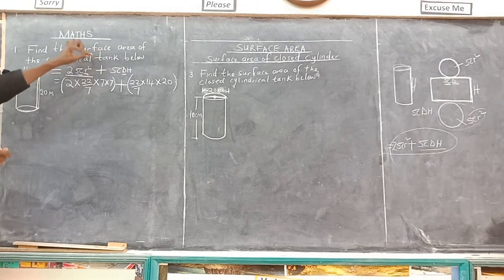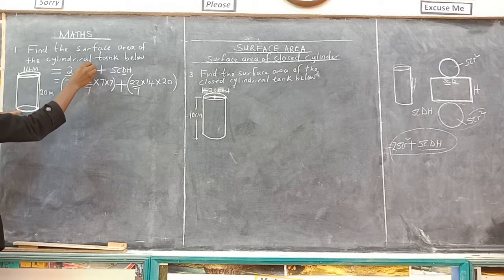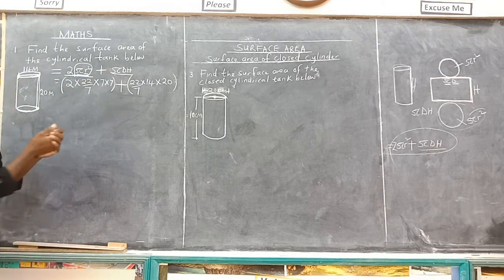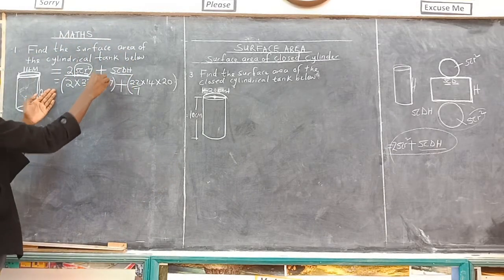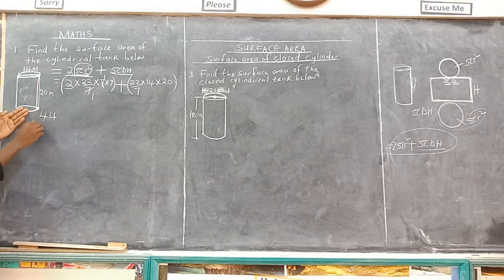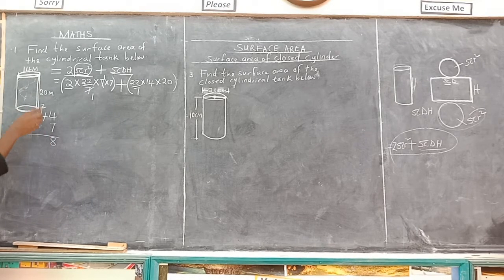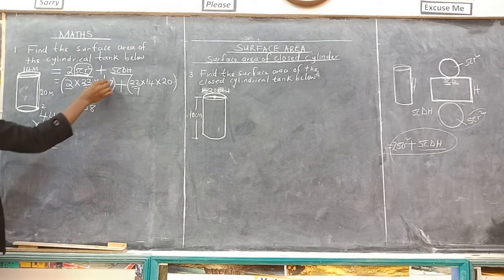Remember, we are talking about surface area — from the word surface, meaning the faces. We add the two circles, that is 2 times pi r squared. Let us simplify: cancel 7 with 7. 2 times 22 gives 44; 44 times 7 gives 308. So 308 is the area of the two circles.